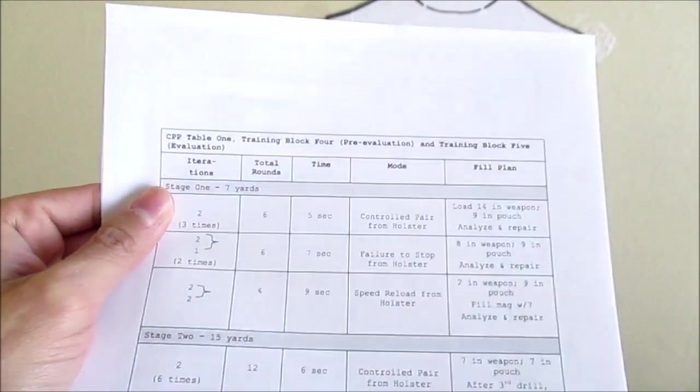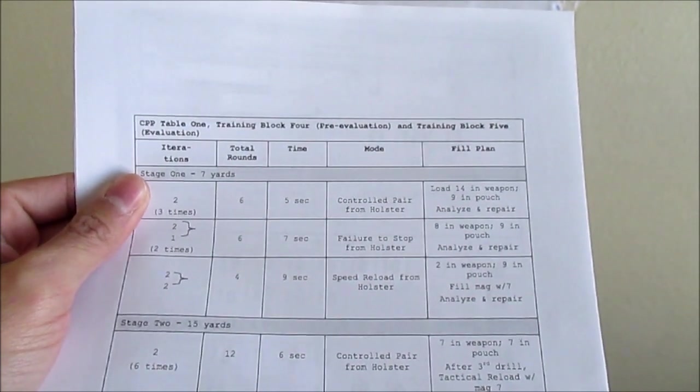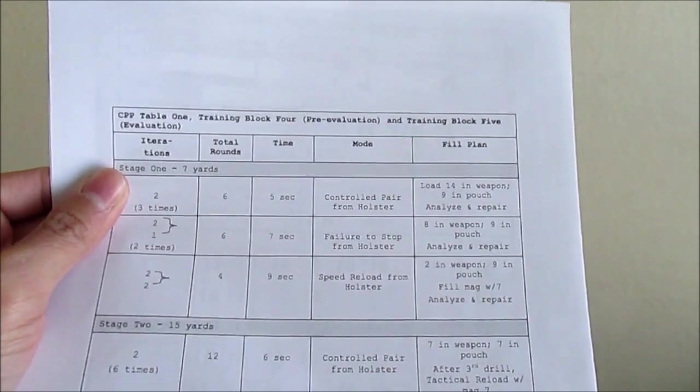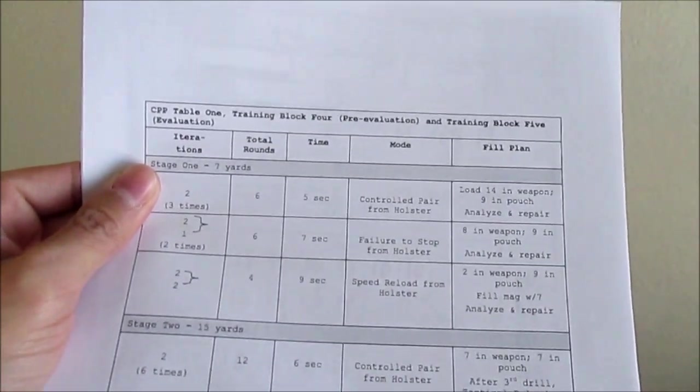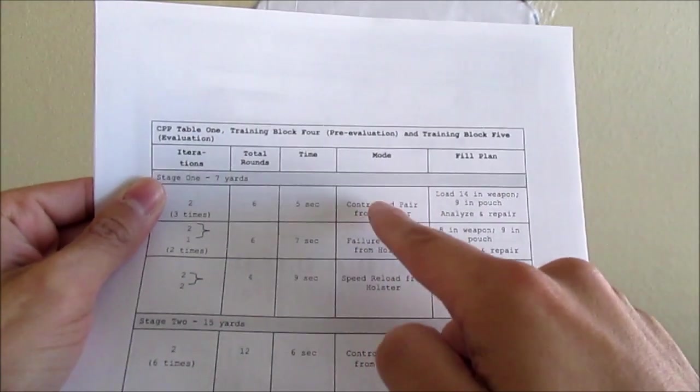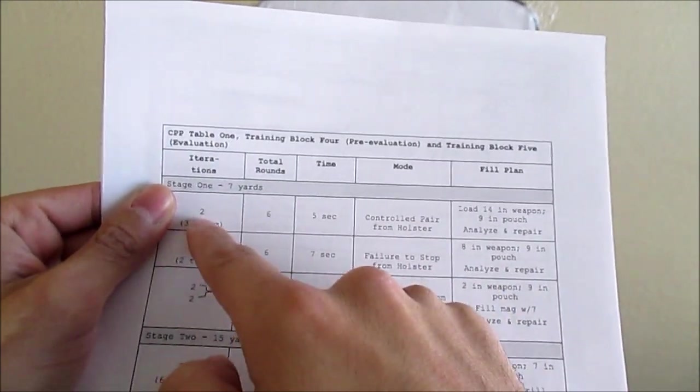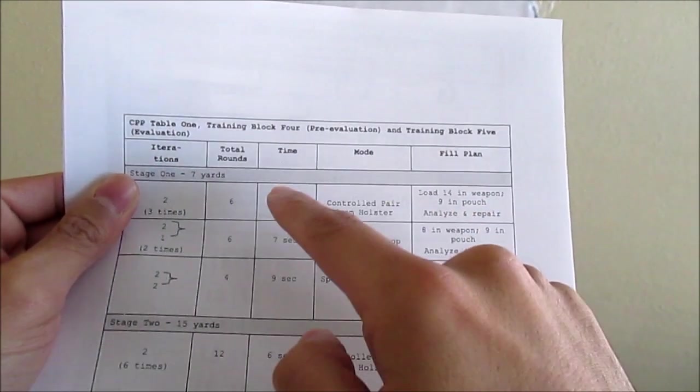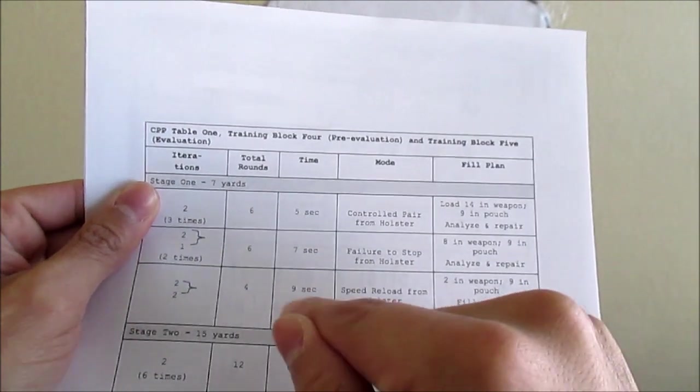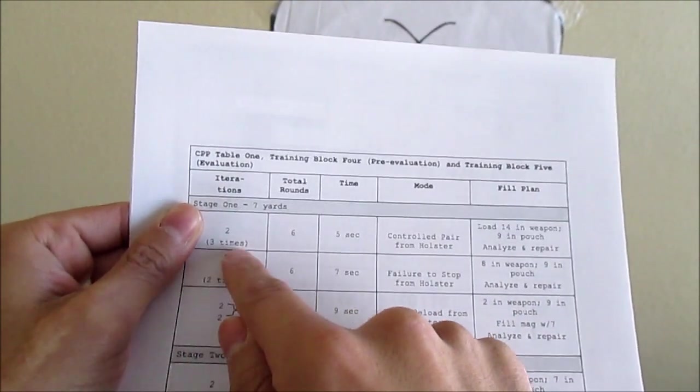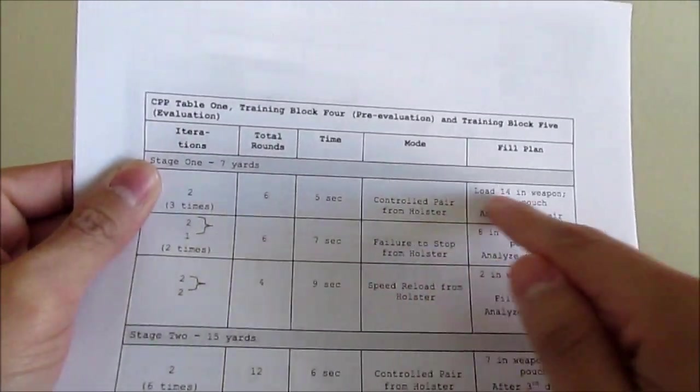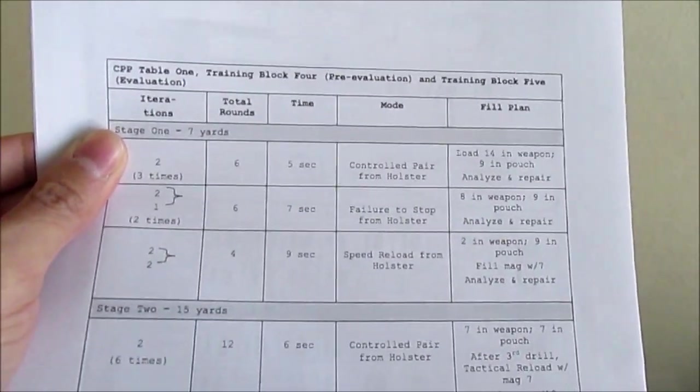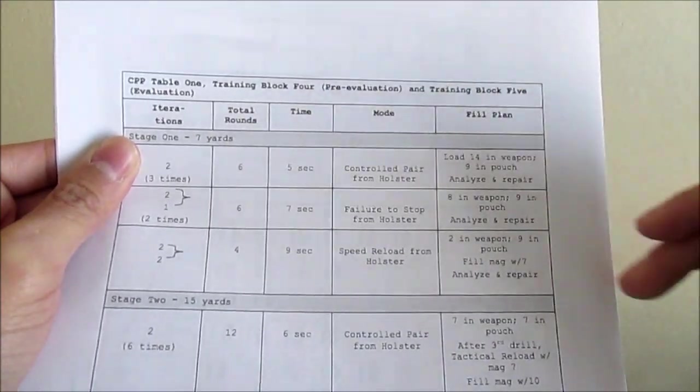So they'll say stand by. And then target. And then at that time you can reach for your gun, aim it, and take 2 shots. And they give you 5 seconds to do that. And so you'll do that a total of 3 times. So that's a total of 6 rounds for that test right there. And then this keeps going. It's pretty simple.